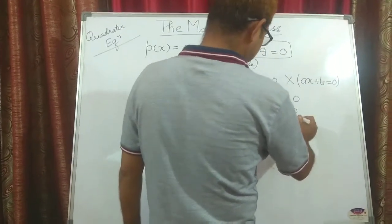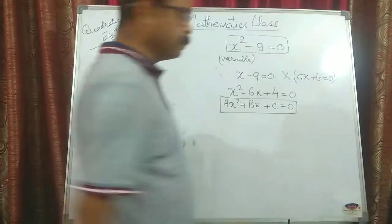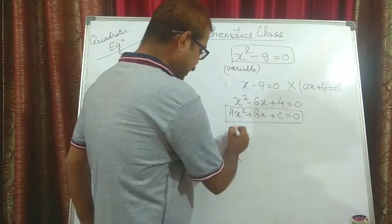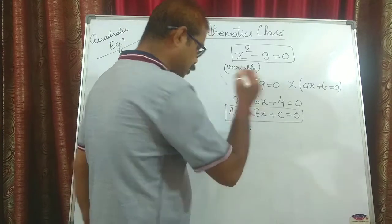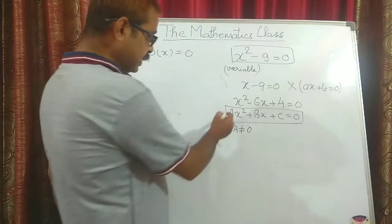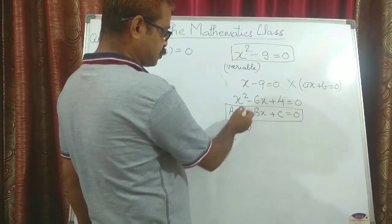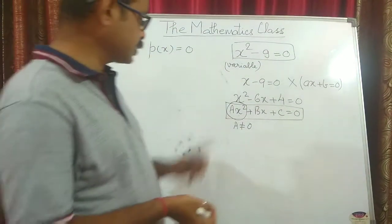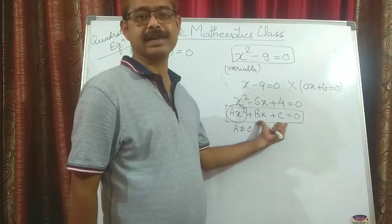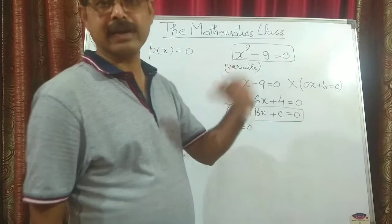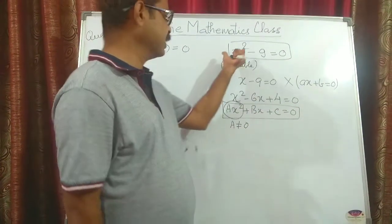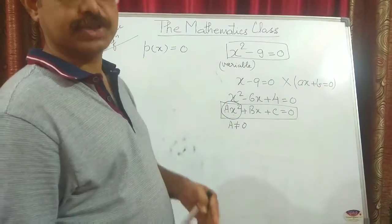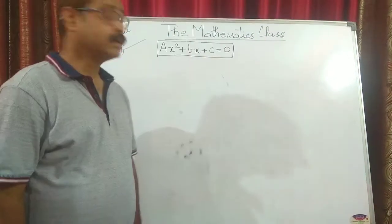The general form is AX squared plus BX plus C equals 0, where A, B, and C are real numbers, and A is never equal to 0. Why? If A equals 0, then the first term becomes 0, leaving only BX plus C, which means the X squared term is missing. Without the X squared term, it will not remain a quadratic equation.